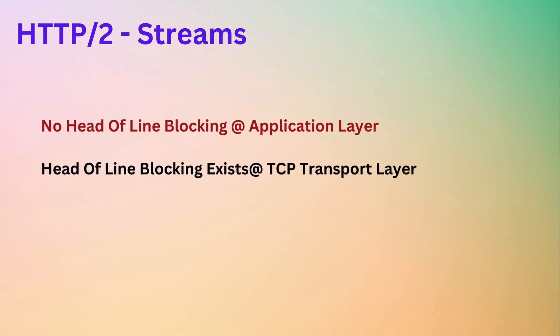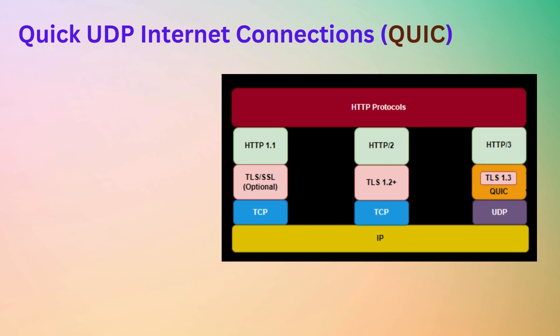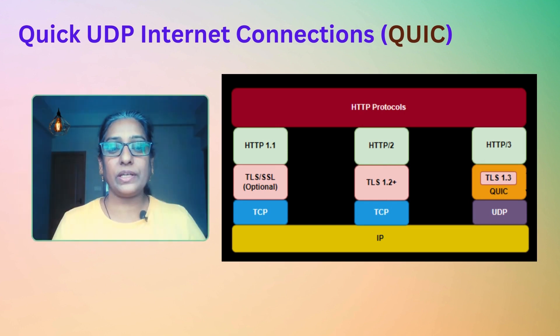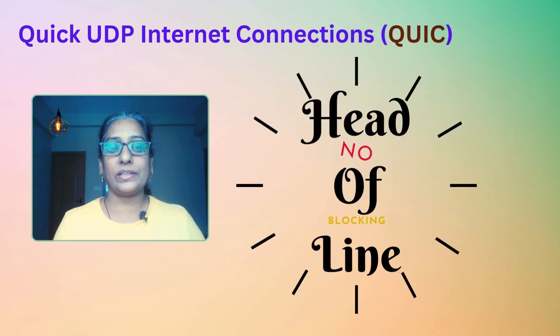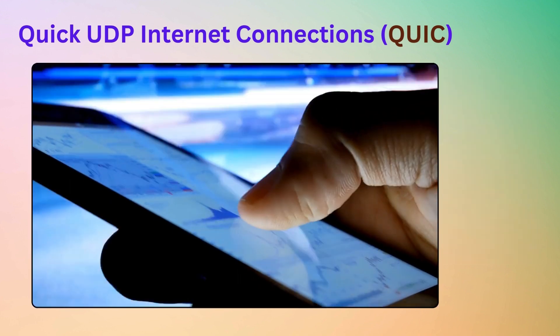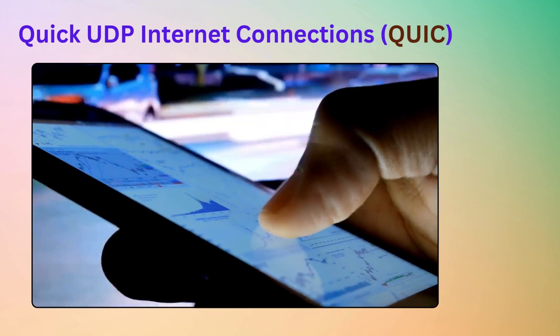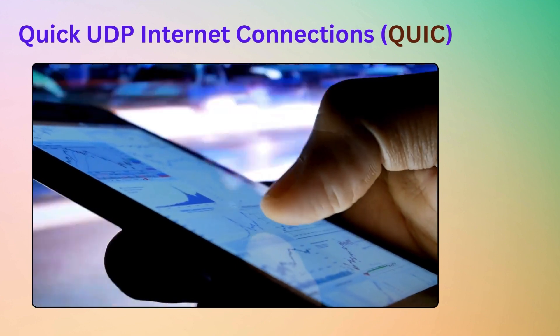But head-of-line blocking still exists at the TCP transport layer in HTTP2. HTTP3 uses QUIC instead of TCP as a transport protocol, thereby removing the TCP head-of-line blocking in the transport layer. QUIC is specifically designed to optimize internet usage on mobile devices.